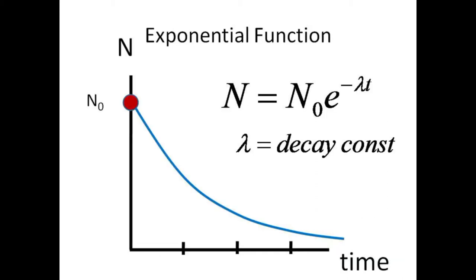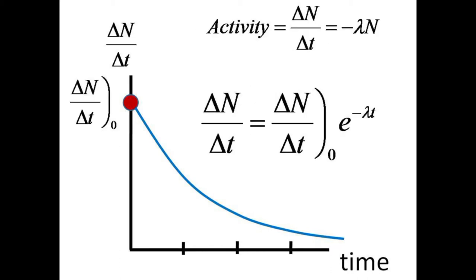The decay constant lambda enables us to use the exponential function as we did in the case of the discharging capacitor. Instead of one-half raised to some power, we have E, the base of the natural logarithm, raised to the negative of lambda times time. Since the activity, or count rate, is proportional to N, the activity decreases with the same exponential decay curve and having the same decay constant.